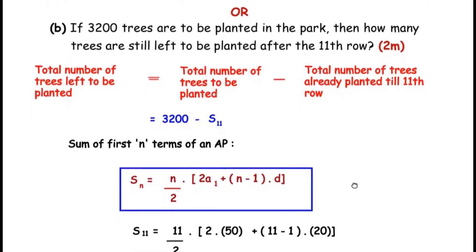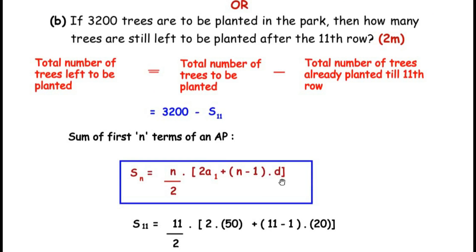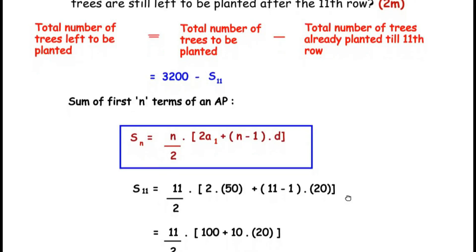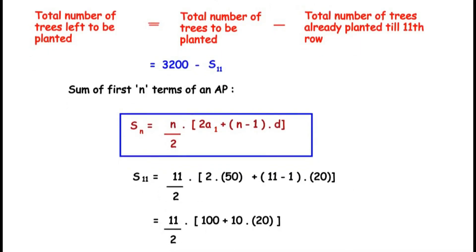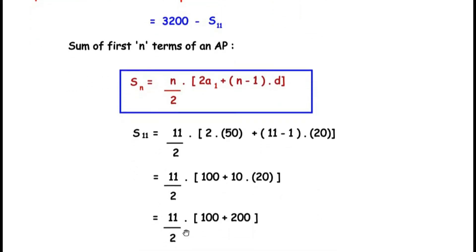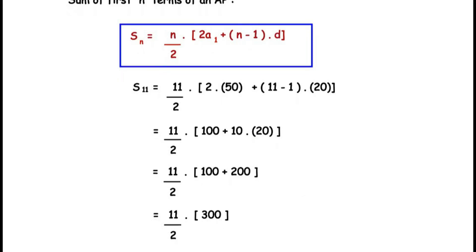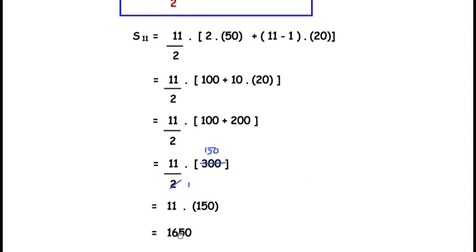To find S11, we use the sum formula with n = 11: S11 = (11/2) × [2 × 50 + (11 − 1) × 20] = (11/2) × [100 + 10 × 20] = (11/2) × [100 + 200] = (11/2) × 300 = 11 × 150 = 1650.